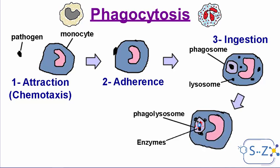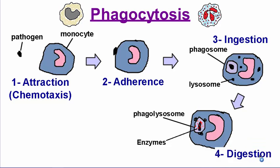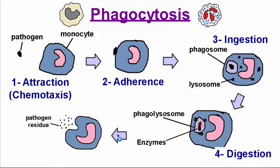Next, lysosomes in the cytoplasm of the phagocyte fuse with the phagosome to form a phagolysosome. Inside the phagolysosome, enzymes are released that break down and kill the pathogen. This step is called digestion. Finally, when the pathogen is completely digested and broken down, the monocyte gets rid of the residues by exocytosis. This last step is called elimination.